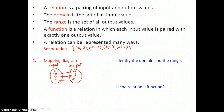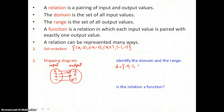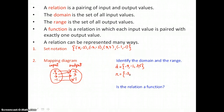We want to identify the domain and range for this relation, so we'll use set notation. Our domain values are those input values: 5, -3, 3, and -1. In set notation we write them in numerical order, so I'll list -3, -1, 3, and 5. The range has 3 members: -2, 3, and -1 — those are the output values.